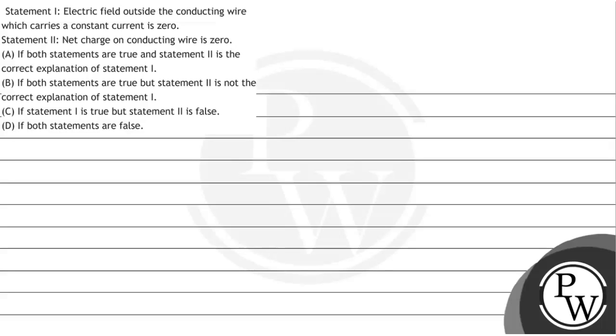Hello, let's read the question. The question gives statement 1 saying that electric field outside the conducting wire which carries a constant current is zero, or statement 2 that net charge on a conducting wire is zero.